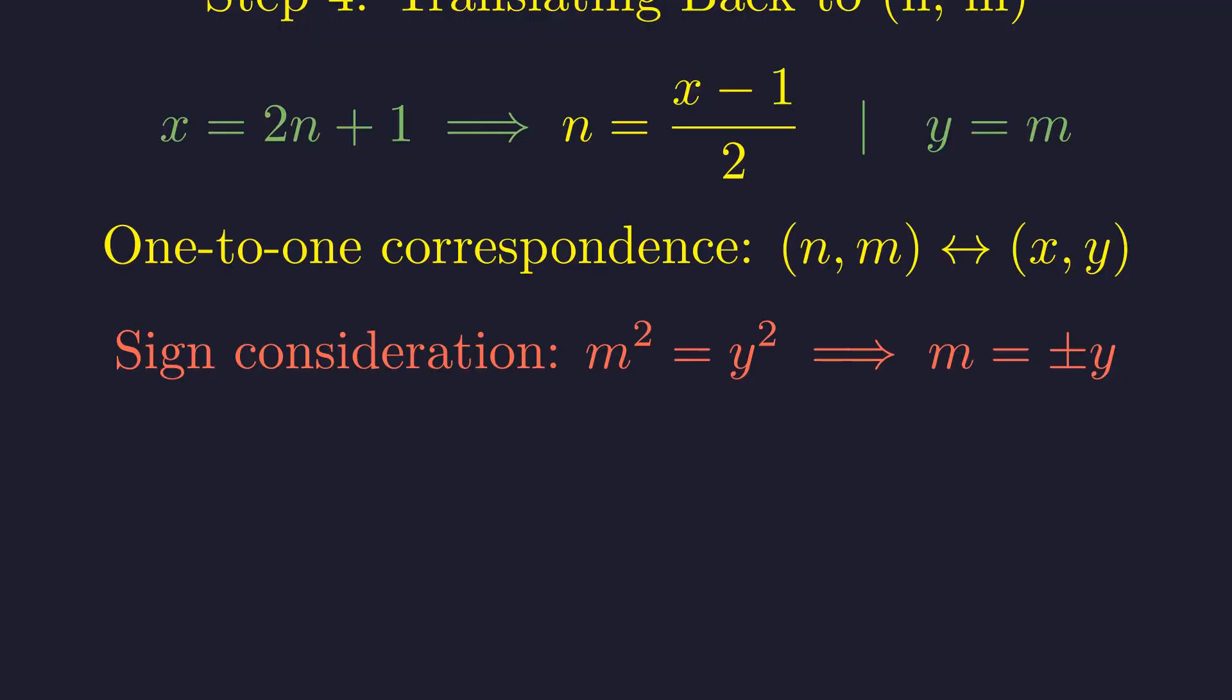Since our original equation involves m squared, both positive and negative values of m give the same result. Therefore, for each Pell solution y, we get m equals plus or minus y.